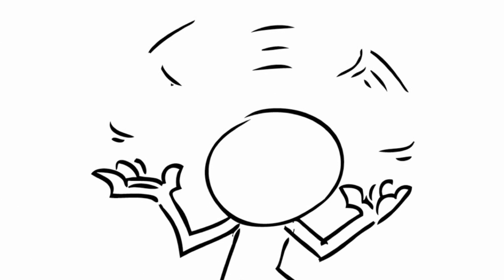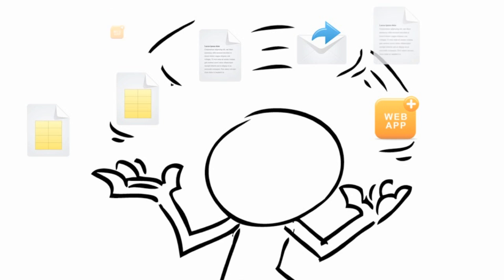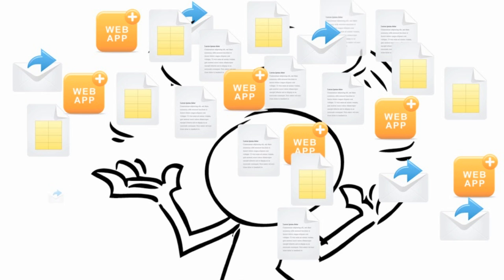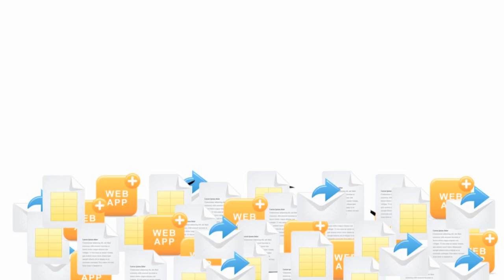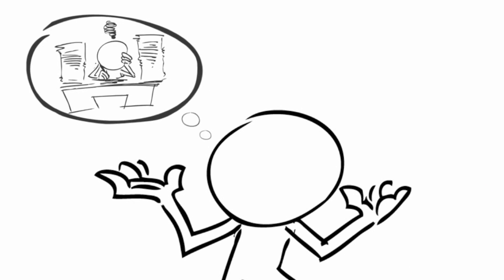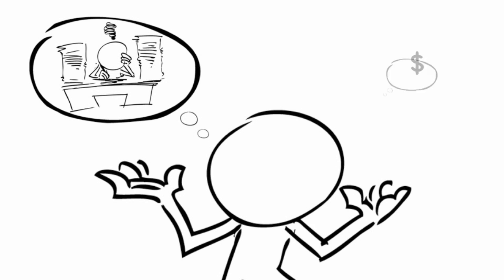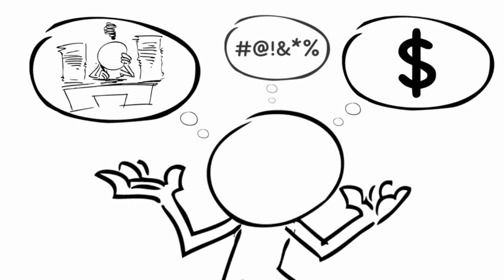If you're like most event professionals, every day you juggle lots of spreadsheets, documents, emails, and web applications to manage your event and business details. This means your information is scattered across a dozen or more different places, and you have to maintain lots of different systems and programs. If this sounds like a lot of additional work and expense to stay organized, you're right, it is.